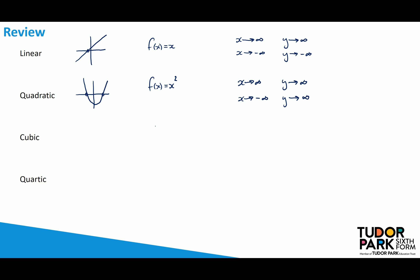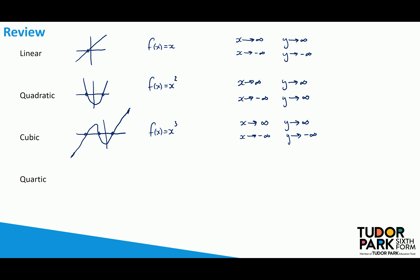Cubic functions are of the form x-cubed, which tells us that we could have a maximum of three roots. As x gets very large and positive, y will get very large and positive. If we cube a negative number, it remains negative, so if x tends towards negative infinity, y will also tend towards negative infinity. Using this information: if x is very large and positive, y is very large and positive; if x is very large and negative, y is very large and negative. We have a dot-to-dot, and we can simply join the points together to end up with a cubic function.